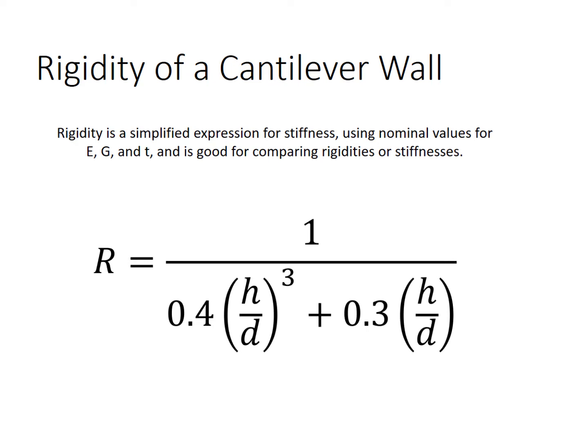The difference between the rigidity and stiffness is that rigidity uses some nominal values for the moduli and for the thickness. And so because these are made up values, it's not correct in an absolute sense, but it's still good for comparing rigidities or for comparing stiffnesses. Let's move now to pencil and paper.